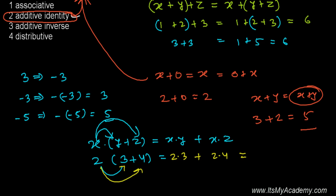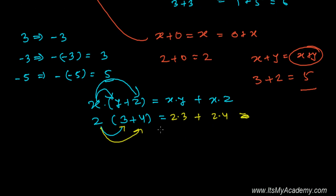You can do both; you'll get the same thing. I'm doing here 2 times 3, that is 6, 2 times 4, that is 8. And here see 2 times 3 + 4, that is 7, it's 7, and 2 times 7, that is 14. And here also 6 + 8, that is 14.